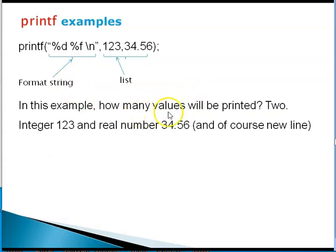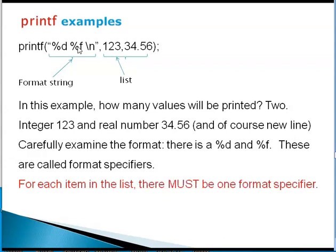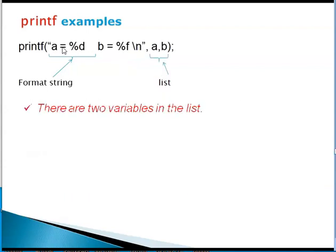In this example, two values will be printed: 123 and 34.56, that is the comma separated list. We see that there is a percent d and percent f and these are called format specifiers. For each item in the list, there must be one format specifier. Similarly, for each format specifier, there must be one item in the list.